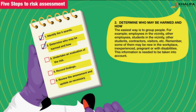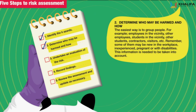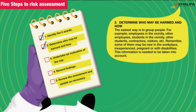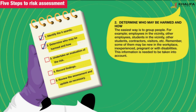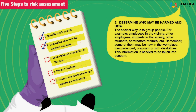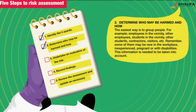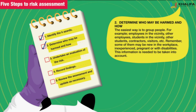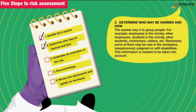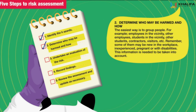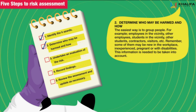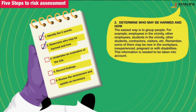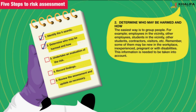Step 2: Determine who may be harmed and how. The easiest way is to group people — for example, employees in the vicinity, other employees, students in the vicinity, other students, contractors, visitors, etc. Remember, some of them may be new in the workplace, inexperienced, pregnant, or with disabilities. This information needs to be taken into account.